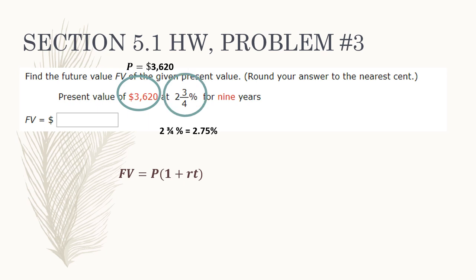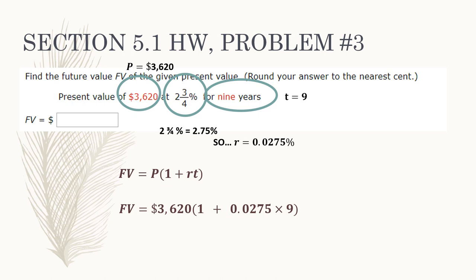Let's identify our variables. P is the principal — $3,620. Next, R: two and three-quarters percent. Three-quarters as a decimal is 0.75, so 2.75%. Moving the decimal two places to the left gives R equals 0.0275. T is nine years. Plugging in: FV equals $3,620 times (1 plus 0.0275 times 9). Multiplying that all out gives you $4,515.95.